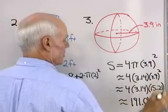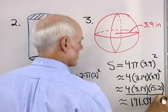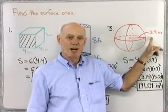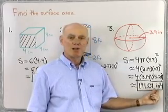My units were inches, so I'm going to say inches squared, or square inches. So the surface area of a sphere that has a radius of 3.9 inches is going to be 191.04 square inches.